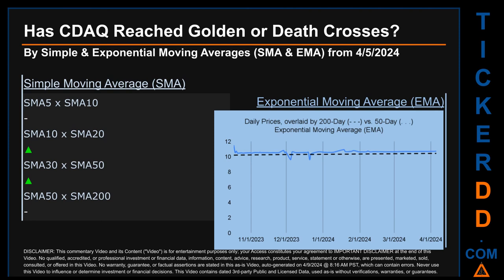Has CDAQ price reached golden or death crosses? Golden cross and death cross are basic signals that compare average prices across two specified trade-day ranges — a short-term versus a long-term range, for example five-day versus 10 trade days. Essentially, a golden cross is a bullish signal — it appears when a ticker's short-term moving average crosses above its long-term average. Vice versa, a death cross is a bearish signal when the short-term crosses below its long-term moving average. For our analysis, we look at both simple moving average (SMA) and exponential moving average (EMA), the latter giving more weighting to recent prices.